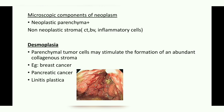Now the term desmoplasia: parenchymal tumor cells may stimulate the formation of an abundant collagenous stroma. A chemical produced by the parenchyma causes the stroma to become more abundant — that is called desmoplasia. It is usually seen in some breast cancers, pancreatic cancers, and also linitis plastica, which is diffuse fibrosis of the wall of the stomach giving it a leather bottle appearance. These are the examples of desmoplasia. Hope you loved the session — thank you.